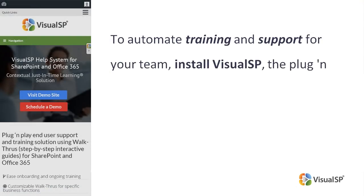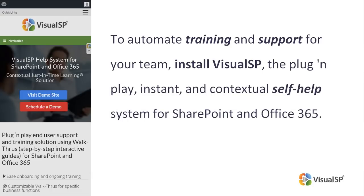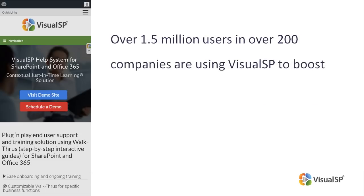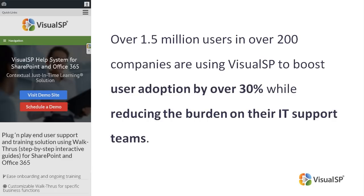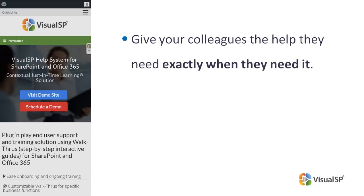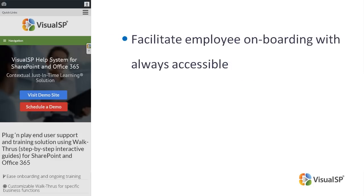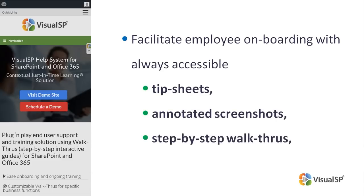If you would like to automate training and support for your team, install Visual SP, the plug-and-play instant and contextual self-help system for SharePoint and Office 365. Over 1.5 million users and over 200 companies are using Visual SP to boost user adoption by over 30% while reducing the burden on their IT support teams. Using Visual SP step-by-step interactive guides give your colleagues the help they need exactly when they need it. Facilitate employee onboarding with always accessible tip sheets, annotated screenshots, and step-by-step walkthroughs and screen capture videos.